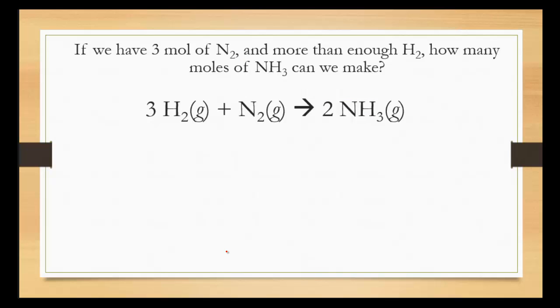For this particular video, we're going to focus just on moles. If we have three moles of N2 and more than enough H2, how many moles of NH3 can we produce? Notice we're going from one compound to another compound. In order to do that, you have to look at the relationships. We have to look at the coefficients. The reason for that is because for every one mole of N2 that we use, we can make two moles of NH3.